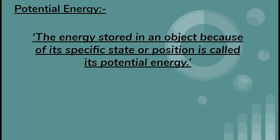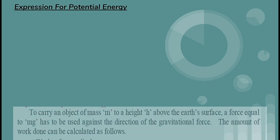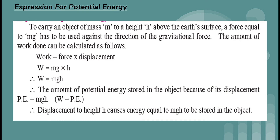Potential energy — the energy stored in an object because of its specific state or position — is called its potential energy. To carry an object of mass m to a height h above the earth's surface, a force equal to mg has to be applied against the direction of the gravitational force.